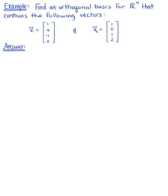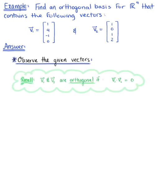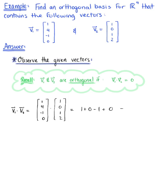Before we start looking for a basis for R4, let's begin by observing the relationship between these two given vectors. Two vectors are orthogonal if their dot product is 0. Taking the dot product of v1 and v2: (1,4,-1,0) · (1,0,1,2) = 1 + 0 - 1 + 0, which equals 0.